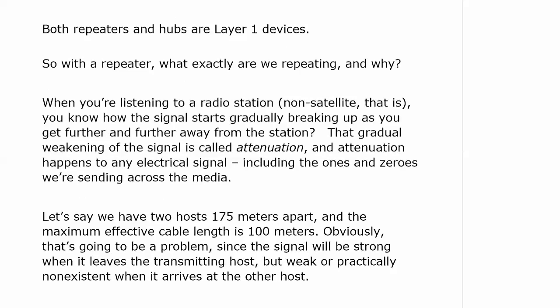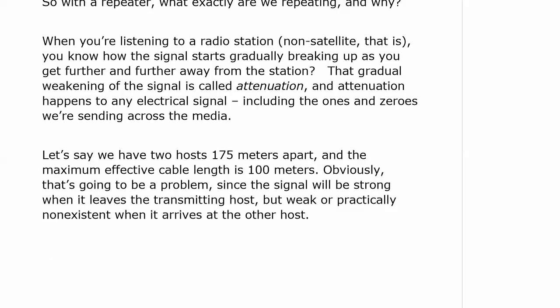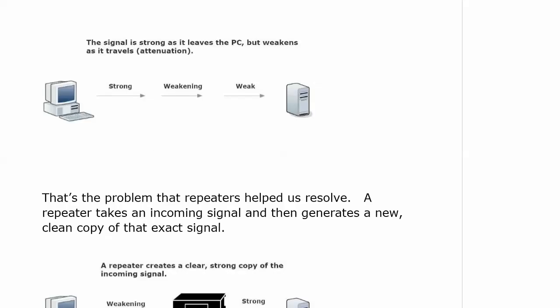You know the deal with the radio station. As you're driving out of a city and listening to a station, that signal starts gradually breaking up as you get further and further away. It's not like you hit a certain distance and it just stops totally — it just starts breaking up a little bit at a time. That gradual weakening of the signal is called attenuation. And that happens to any electrical signal, which includes the ones and zeros we're sending across our media. We talked about a maximum effective cable length of 100 meters. Well, let's say we have two hosts that are 175 meters apart. That's going to be a problem because the signal is going to be strong when it leaves the transmitting host, but it's either going to be extraordinarily weak or non-existent when it gets to the other host.